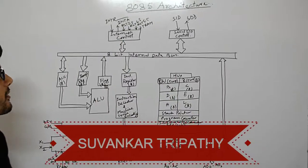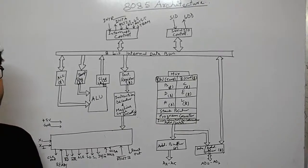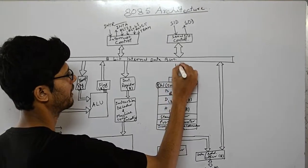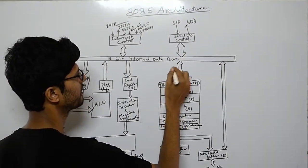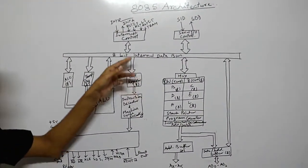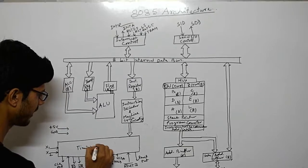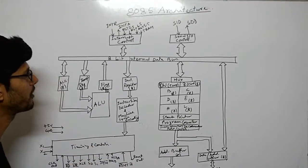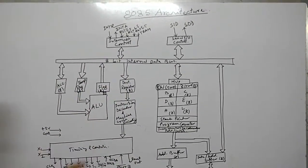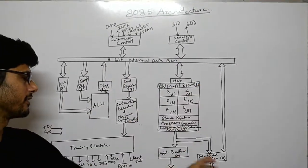We are discussing the basic features of the 8085 microprocessor, and now we will go for the 8085 internal architecture. There are different blocks — some blocks are bidirectional and some are unidirectional. The main blocks include the timing and control unit, arithmetic logic unit, and internal buses.